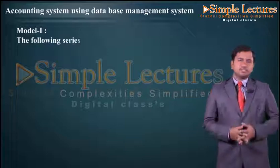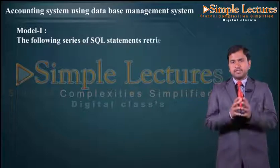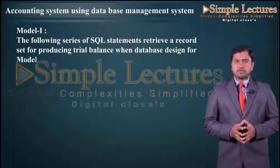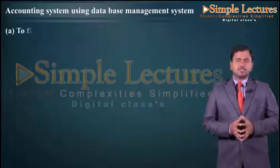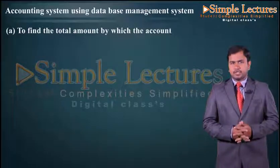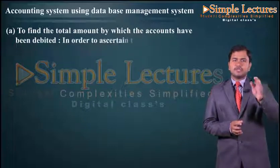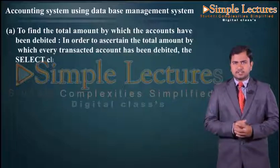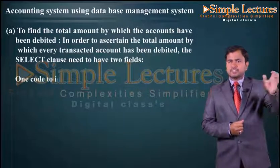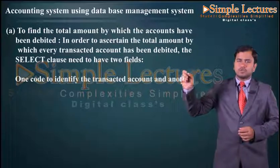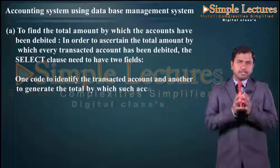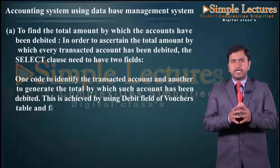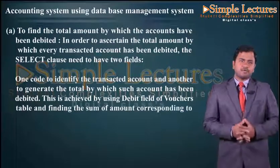In Model 1, the following series of SQL statements retrieve a record set for producing a trial balance. To find the total amount by which accounts have been debited, the SELECT clause needs two fields: one code to identify the transacted account, and another to generate the total by which the account has been debited. This is achieved by using the debit field of the voucher table and finding the sum of amount corresponding to each transacted account.